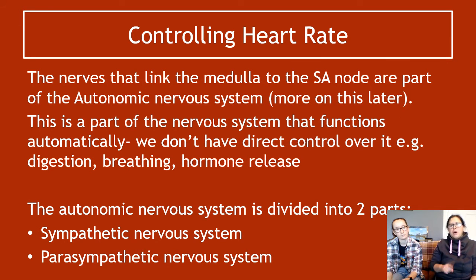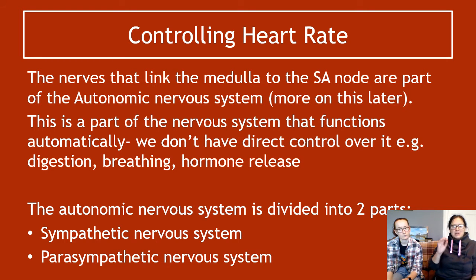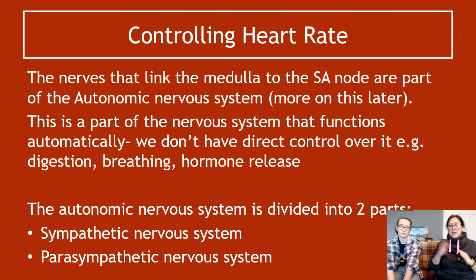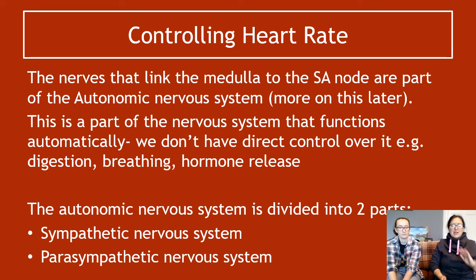The nerves linking the medulla to the SA node are part of the autonomic nervous system, which you will cover in unit three. The autonomic nervous system functions automatically — we don't have direct control over it. It controls things like digestion, breathing, hormone release, and heart rate. It is divided into two parts: the sympathetic nervous system and the parasympathetic nervous system.